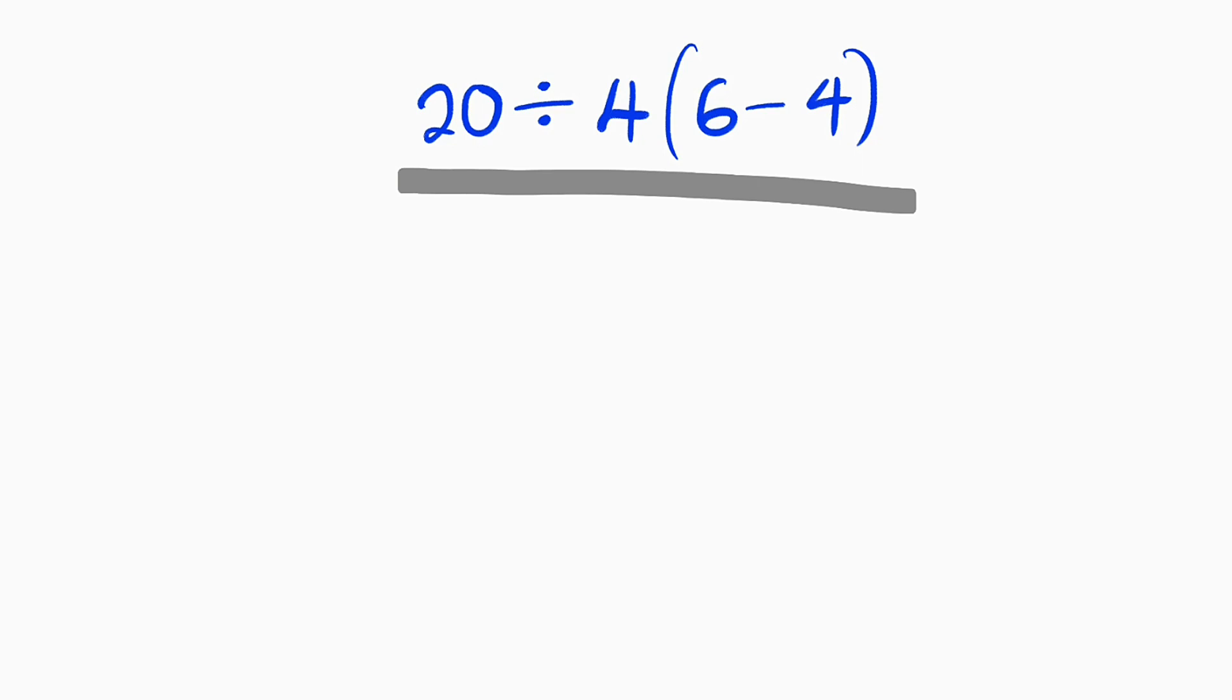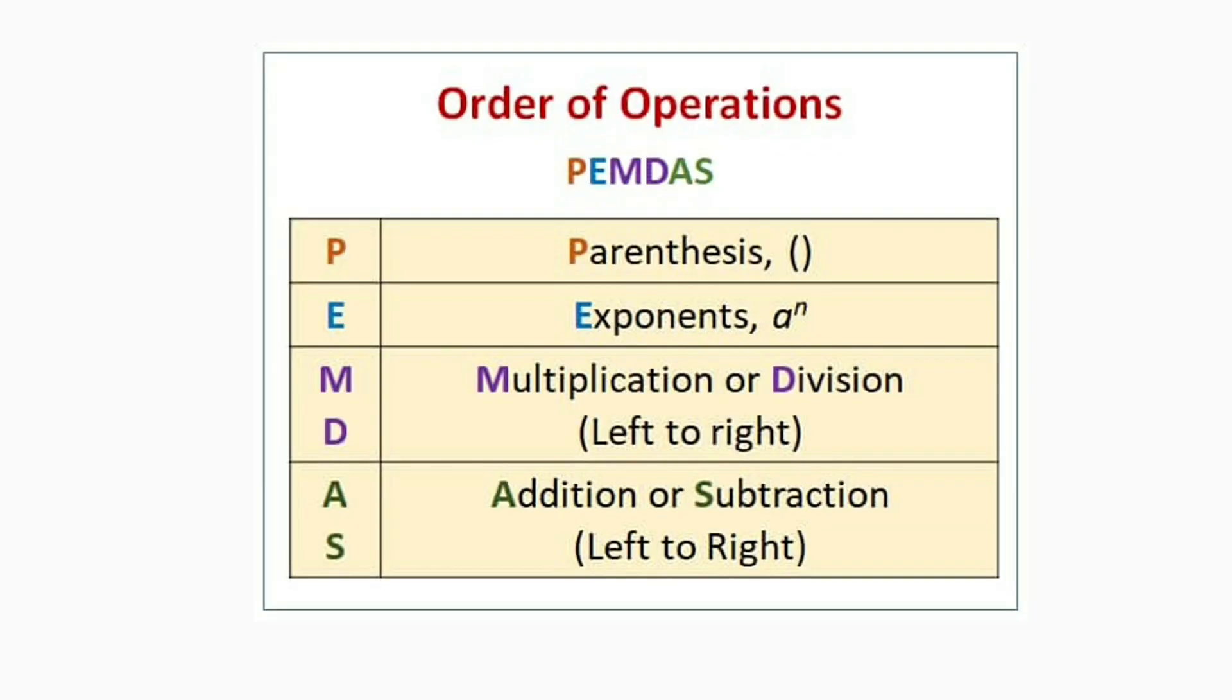But first of all, let us understand PEMDAS. We have here order of operations PEMDAS. P stands for parenthesis, E stands for exponents. In the third row, we have multiplication and division together. Likewise, in the fourth row, we have addition and subtraction.